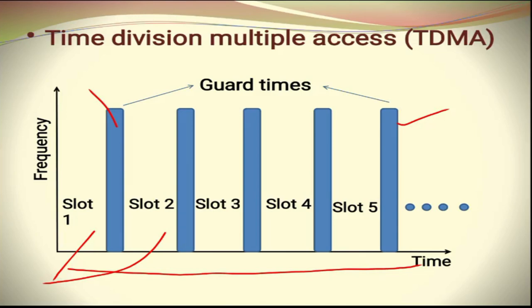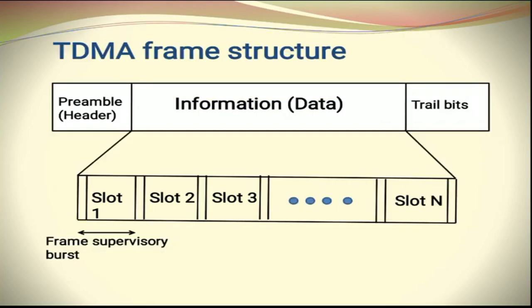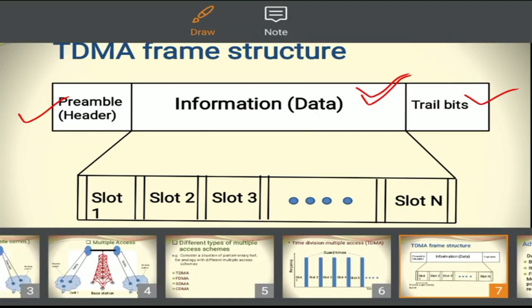Guard times are basically filters. Now let us look at the TDMA frame structure. The TDMA frame structure is made up of three things: preamble, information data, and trail bits. Looking at the middle part — information data — the frame contains N number of bursts, meaning N number of slots.